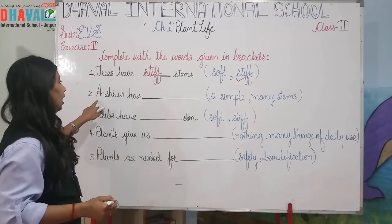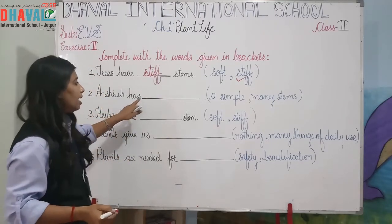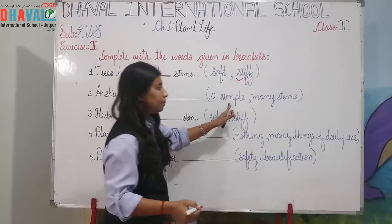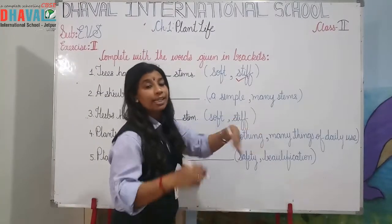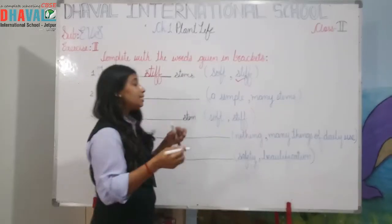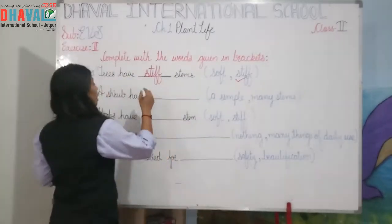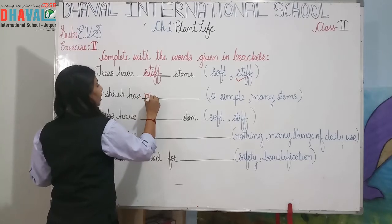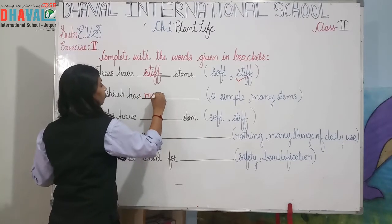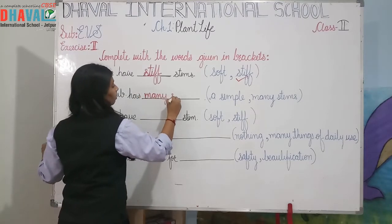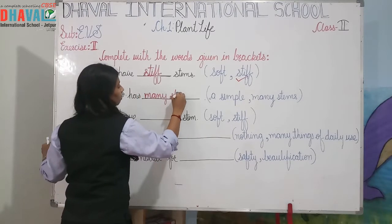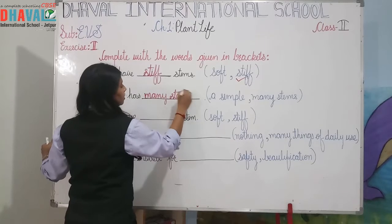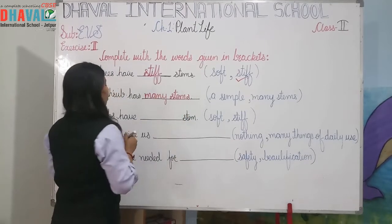Second one: a shrub has dash — a simple stem or many stems? It has many stems. So the answer is: a shrub has many stems.